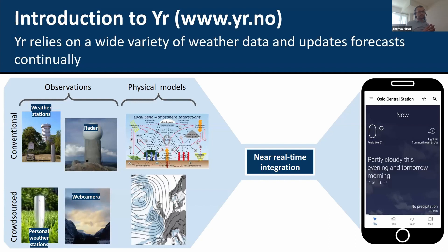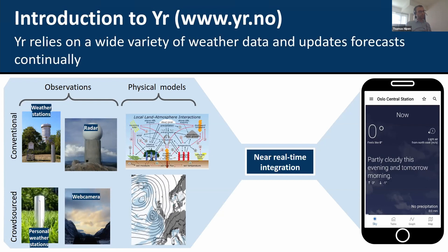Any systematic errors or issues in our product we basically have to use machine learning to fix. To help us do that, we integrate a lot of different data sources — both observation data and physical models. On the observation side we use conventional weather stations and radar, but increasingly we're also using crowdsourced weather data. One example is personal weather stations — these are stations that private people buy in the store and put up in their backyard. One company called Netatmo has a lot of stations in the Nordics that we have access to. We're also using web cameras and increasingly looking at more data sources.